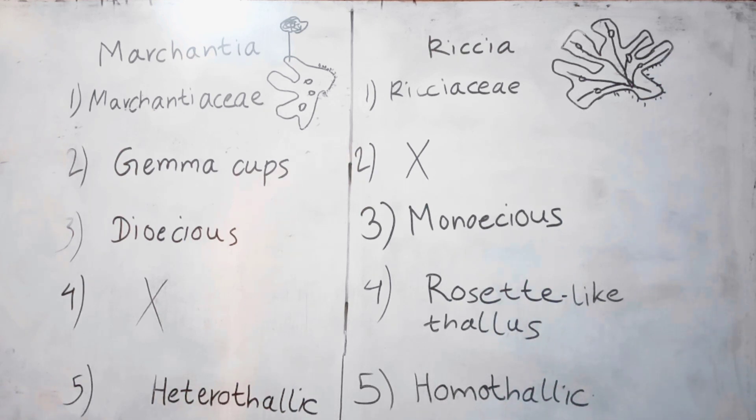The thallus of Marchantia is heterothallic, meaning male and female reproductive organs are present on different thallus and on different plants, so they are also called dioecious. The thallus of Riccia is homothallic, meaning male and female reproductive organs are present on the same thallus and on the same plant, so it is a monoecious plant.